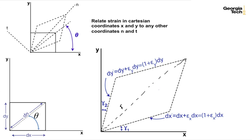And just like we did with dx and dy, dn prime, the new length, is equal to dn plus epsilon sub n dn, or 1 plus epsilon n times dn.